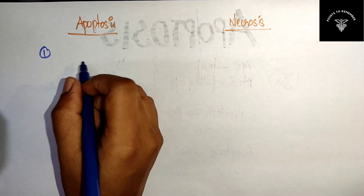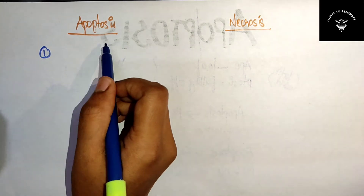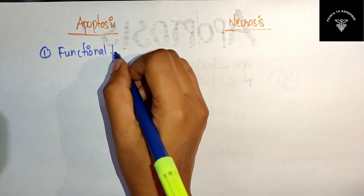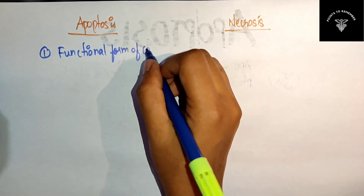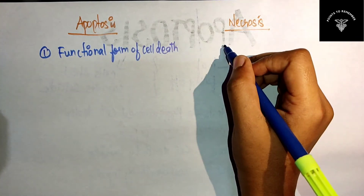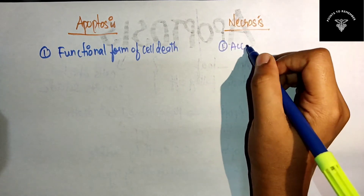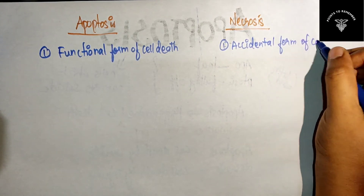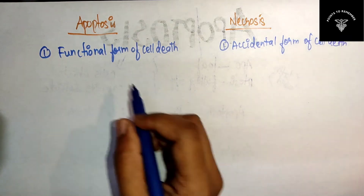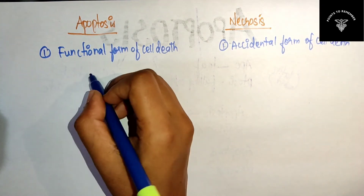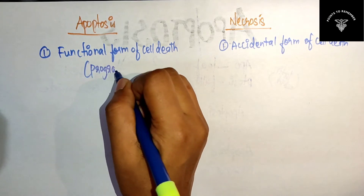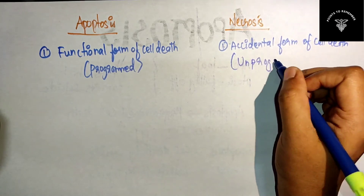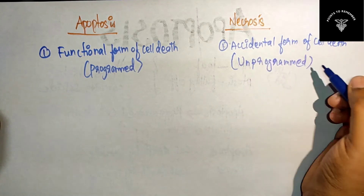First difference: apoptosis is the functional form of cell death, while necrosis is the accidental form of cell death. Apoptosis is programmed cell death and necrosis is unprogrammed cell death. Second difference: apoptosis occurs under a physiological condition, while necrosis occurs under a pathological condition — it happens due to trauma or injury.